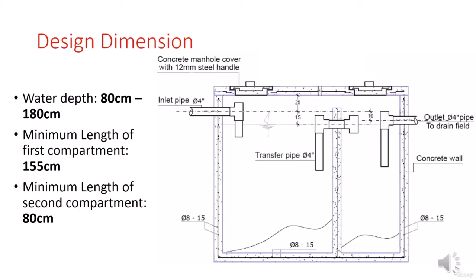Now let's check what are the design dimensions and requirements of the sedimentation tanks. The inlet pipe, the transfer pipe, and the outlet pipe must have a diameter of 4 inches. The inlet pipe must be placed 25 centimeters below the slab. The transfer pipe is placed 15 centimeters below the inlet pipe, and the outlet pipe is placed 10 centimeters below the inlet pipe.